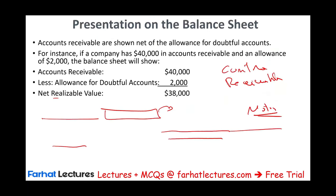Now let's write off an account. Suppose Fresh Market determined that Farhat's $500 account is uncollectible — say I purchased from them and did not pay my bill. They will debit the allowance for $500 and credit my receivable account for $500. They had $2,000 in the allowance; now it's reduced by $500, leaving $1,500. My balance with them becomes zero. As far as their accounting is concerned, they wrote off the account — sometimes they sell it and a collection agency contacts you.